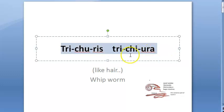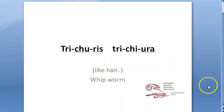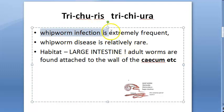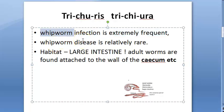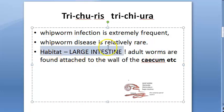That is why it is called Trichuris trichiura, but its common name is whipworm. This whipworm infection is very common — a lot of people are infected. However, it does not turn into disease in everybody; it is usually asymptomatic and only becomes a disease in some people.